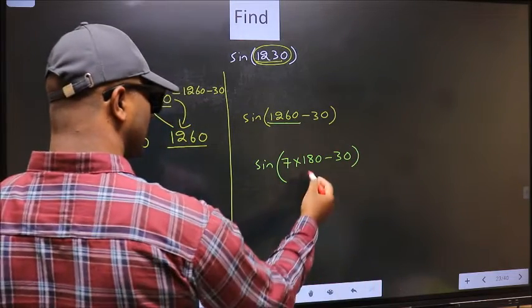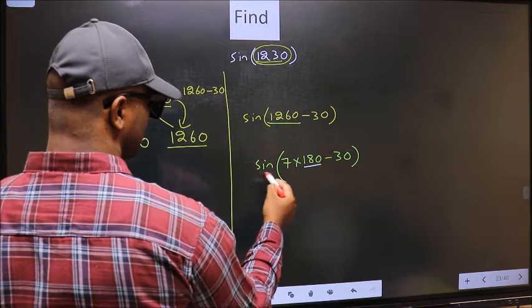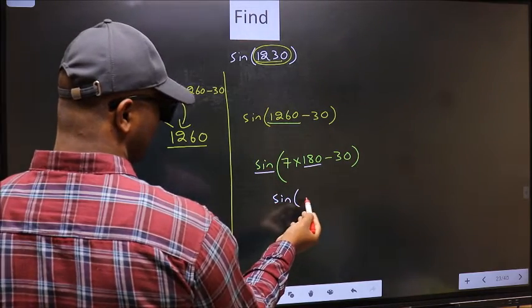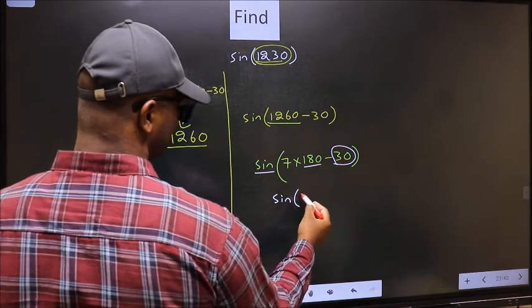Next. Here we have 180. So sin is not going to change. It will remain sin. And inside we get this angle 30.